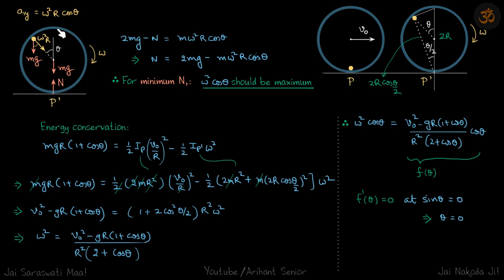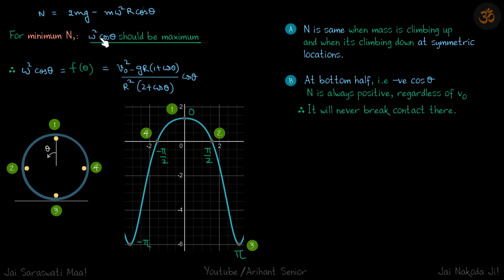At these two points there are maxima or minima of the normal reaction. Intuitively, when the particle is at the bottom, the normal reaction is going to be maximum. So the maximum normal reaction occurs when the particle is at the bottom, and the minimum is when it is at the top.